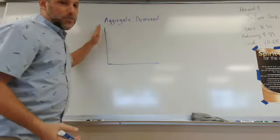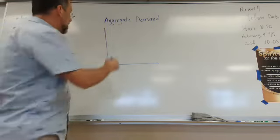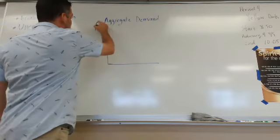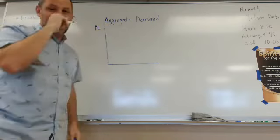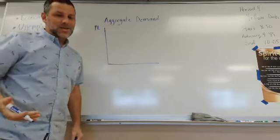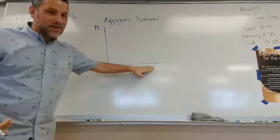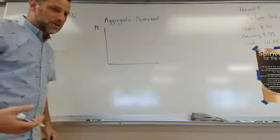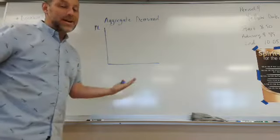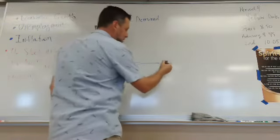Instead of having price on our Y axis, we're going to have our price level. Think of price level kind of being like inflation, the prices of everything. And then down here, instead of having quantity like unit two, we're going to have the quantity of everything that we're going to call output.